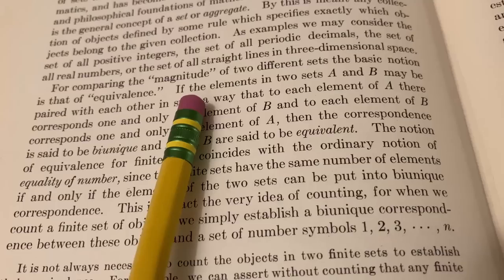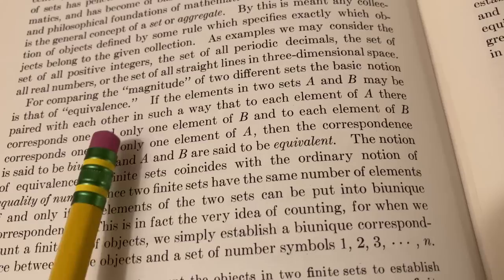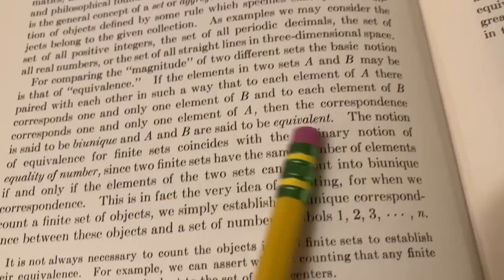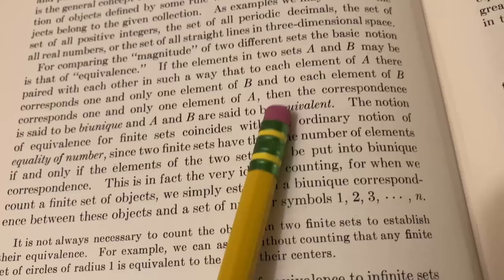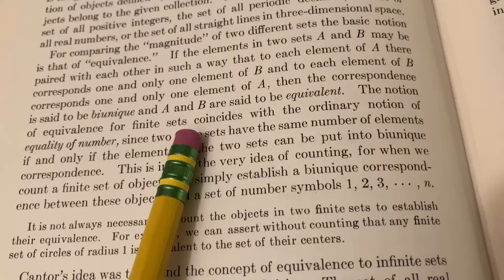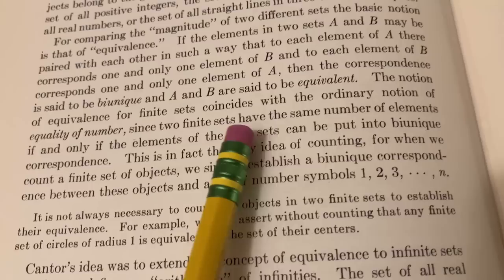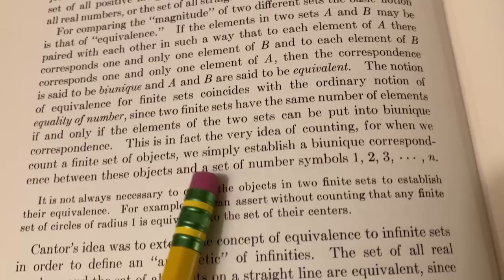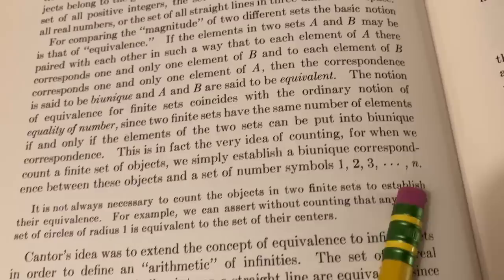Here Courant talks about what it means for two sets to be equivalent. He says, if the elements in two sets A and B may be paired with each other in such a way that to each element of A there corresponds one and only one element of B, and the correspondence is said to be bi-unique and A and B are said to be equivalent. This is super important because now you can compare two sets and you can determine if they're equivalent. And the notion of equivalence for finite sets coincides with the ordinary notion of equality of number, since two finite sets have the same number of elements if and only if the elements of the two sets can be put into a bi-unique correspondence. He says, this is in fact the very idea of counting. For when we count a finite set of objects, we simply establish a bi-unique correspondence between those objects and the set of number symbols one through n. Wow, just incredible.